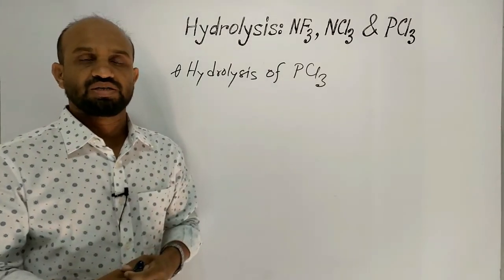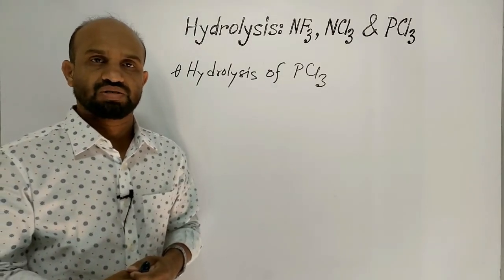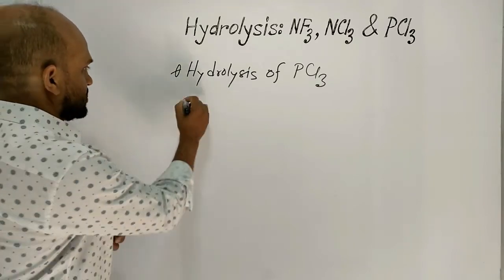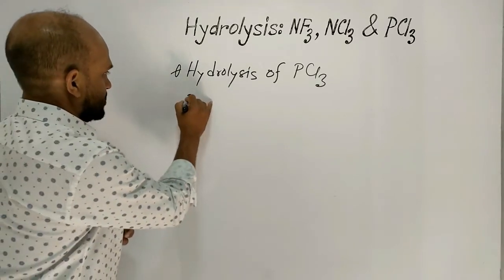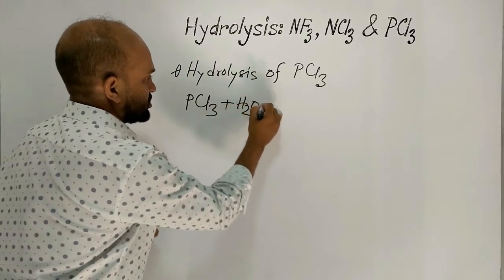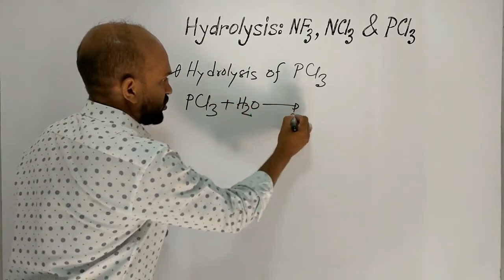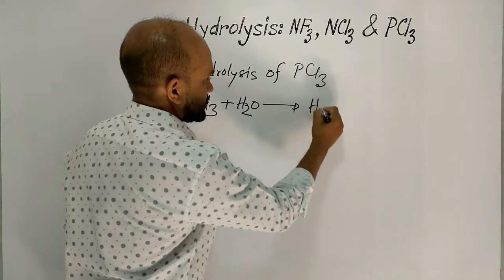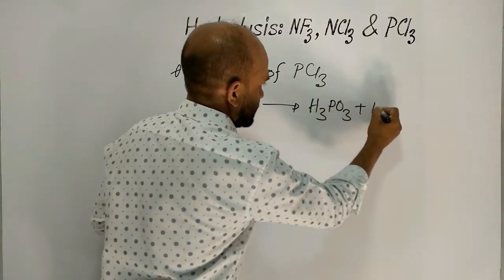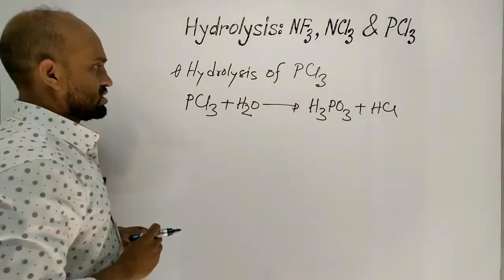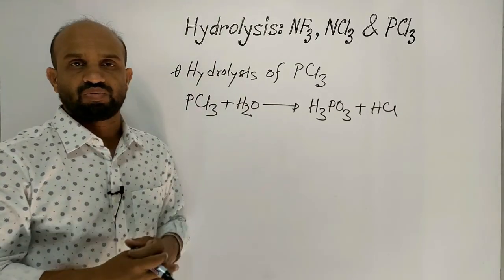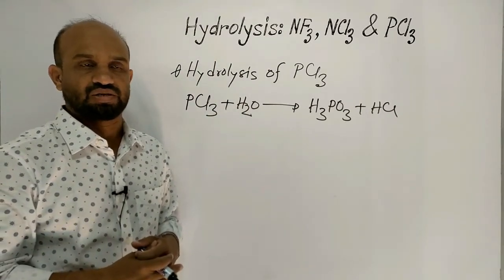First of all, let's see the reaction of the hydrolysis of Phosphorus Trichloride. Phosphorus Trichloride reacting with water forms Phosphorous acid and Hydrochloric acid. Now let's see the mechanism of this hydrolysis reaction.